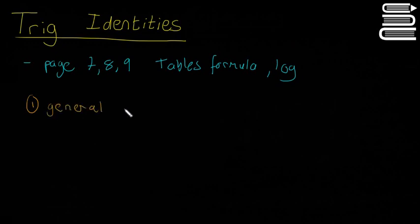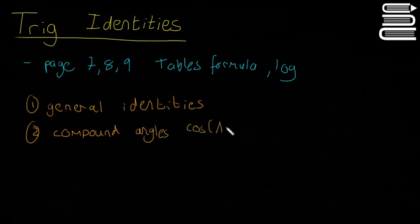We have general identities, and then there's going to be a few formulas on compound angles. Compound angles are things like cos(A+B).